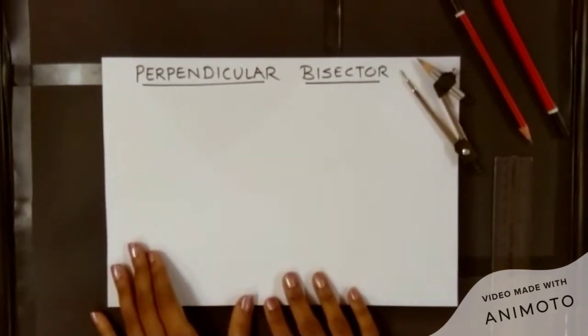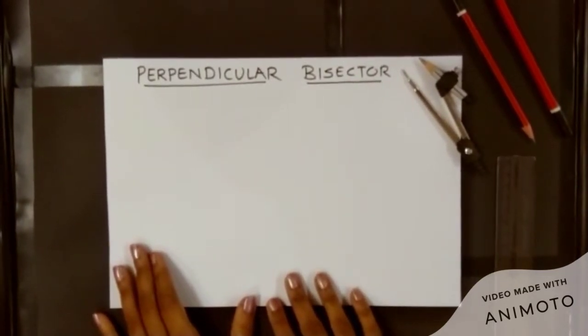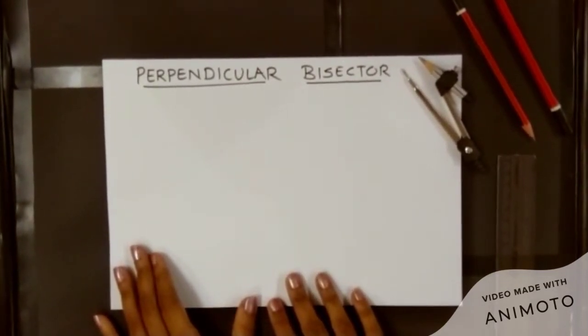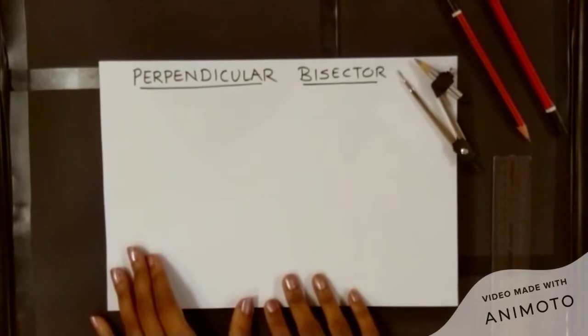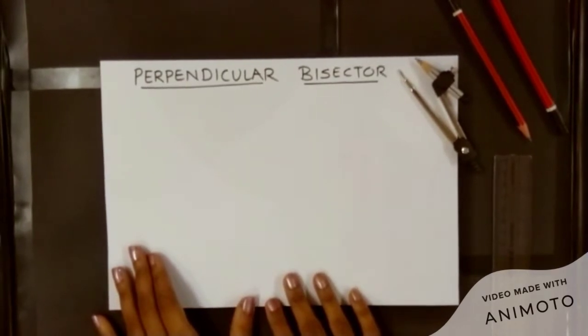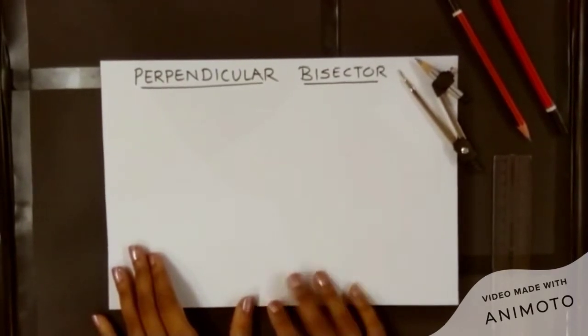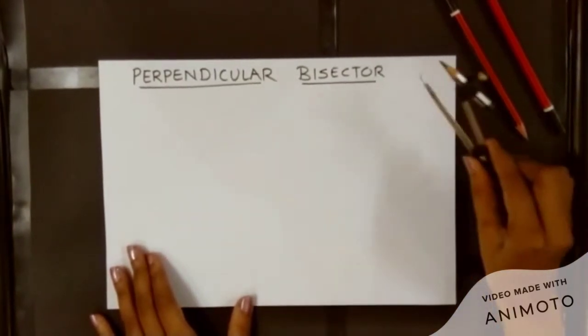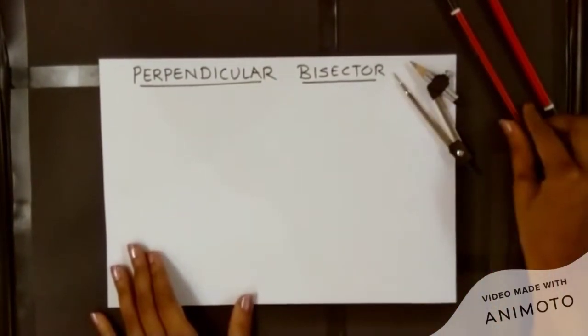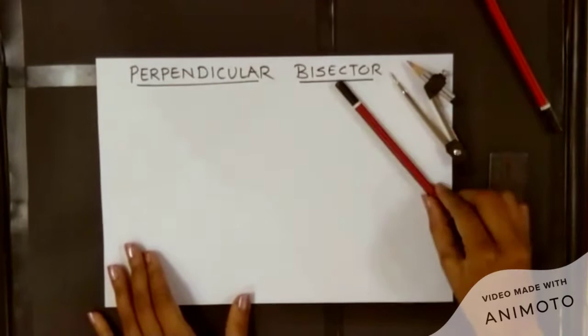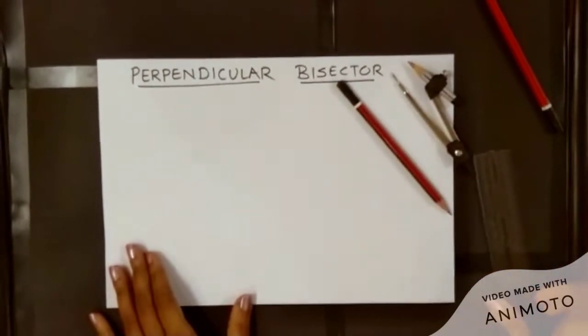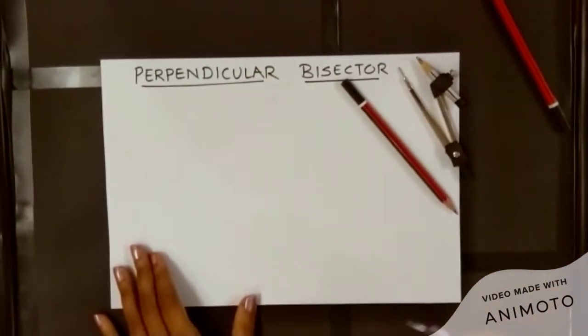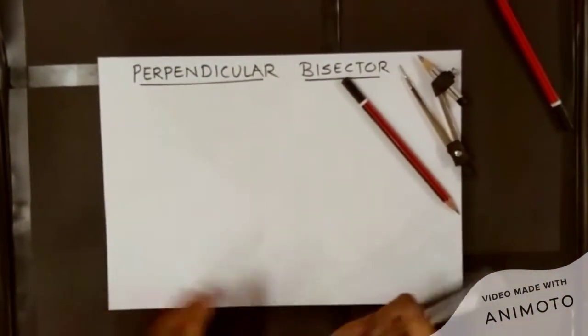In today's video, we are going to learn how to draw a perpendicular bisector. For this, you need a compass, you need a pencil, and you need a ruler.